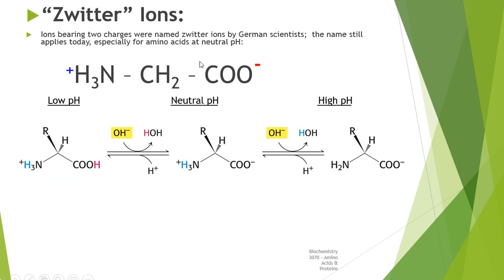A detailed explanation of zwitterion: just to recollect, ions bearing two charges were named zwitterions by German scientist Zwitter. That's why the name still applies today, especially for amino acids at neutral pH. This is how the ionic form of amino acid is, with both charges. Here R is not there, here is carboxylic ion and here is ammonium ion. At low pH, you see NH3+ ion and the carboxyl is protonated in nature.